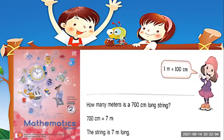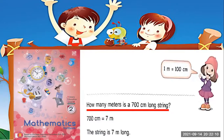Now another example. Don't forget that 1m is equal to 100cm. How many meters is a 700cm long string? As we said, 100cm is equal to 1m. So: 100 is 1, 200 is 2, 300 is 3 — and 700 is 7. So 700cm is equal to 7m.